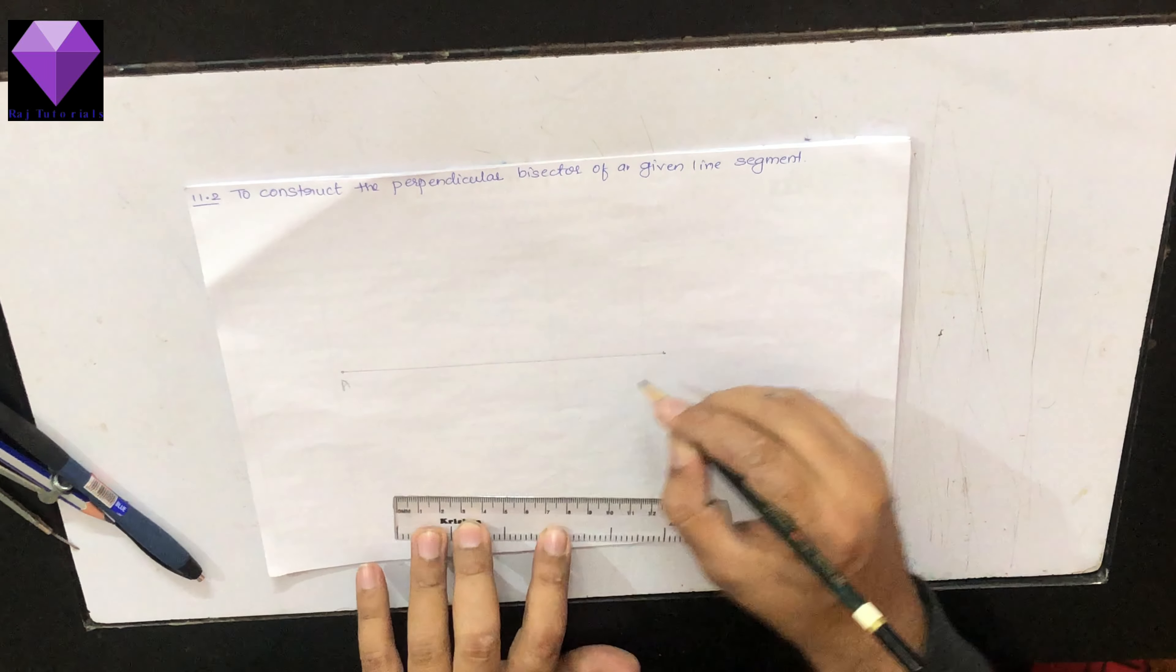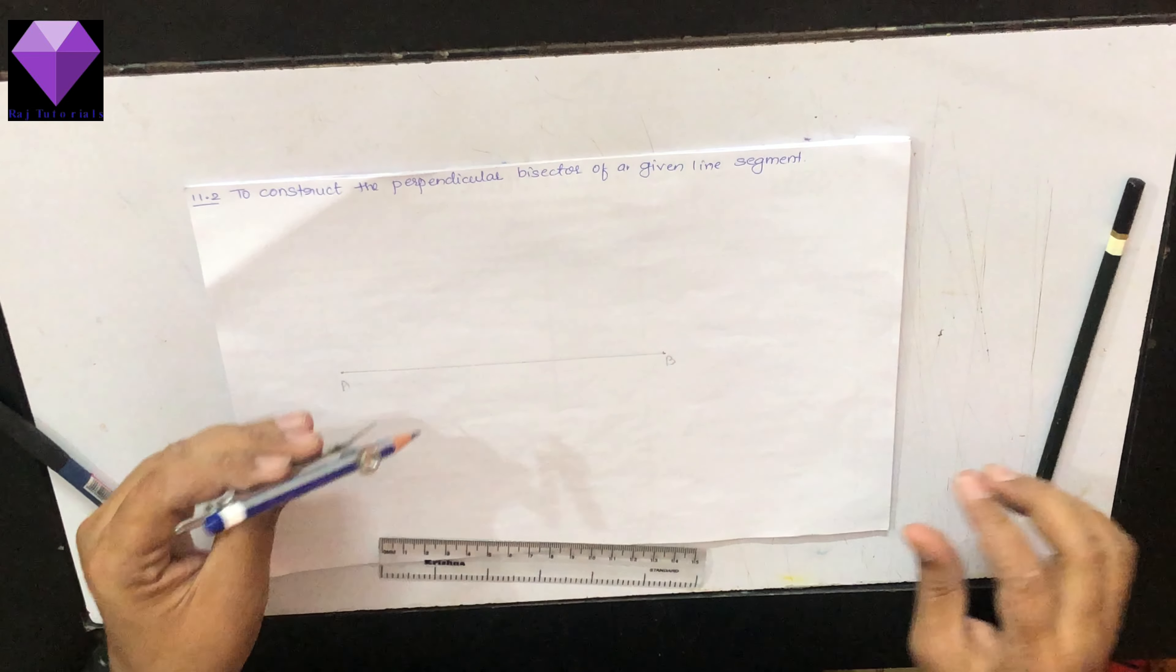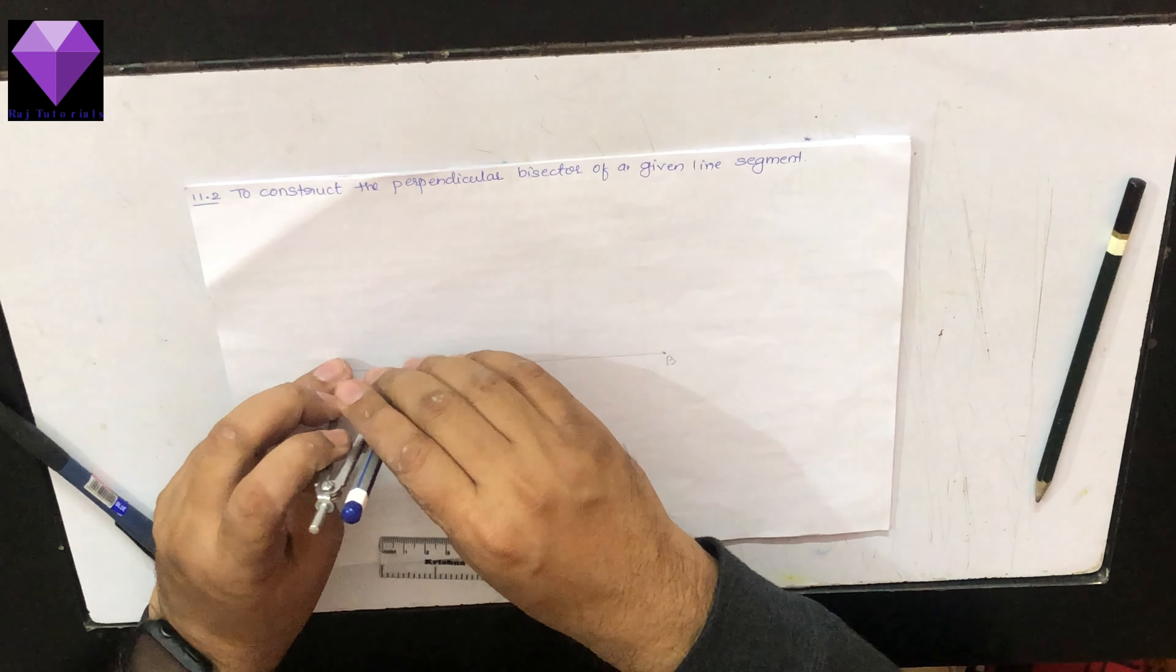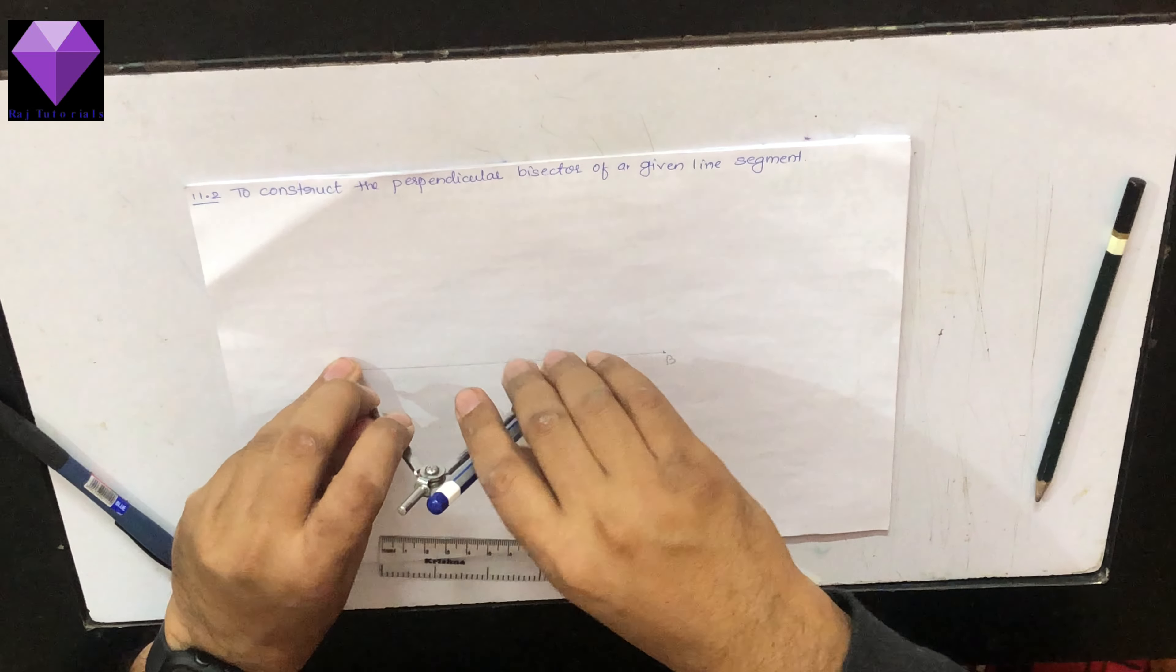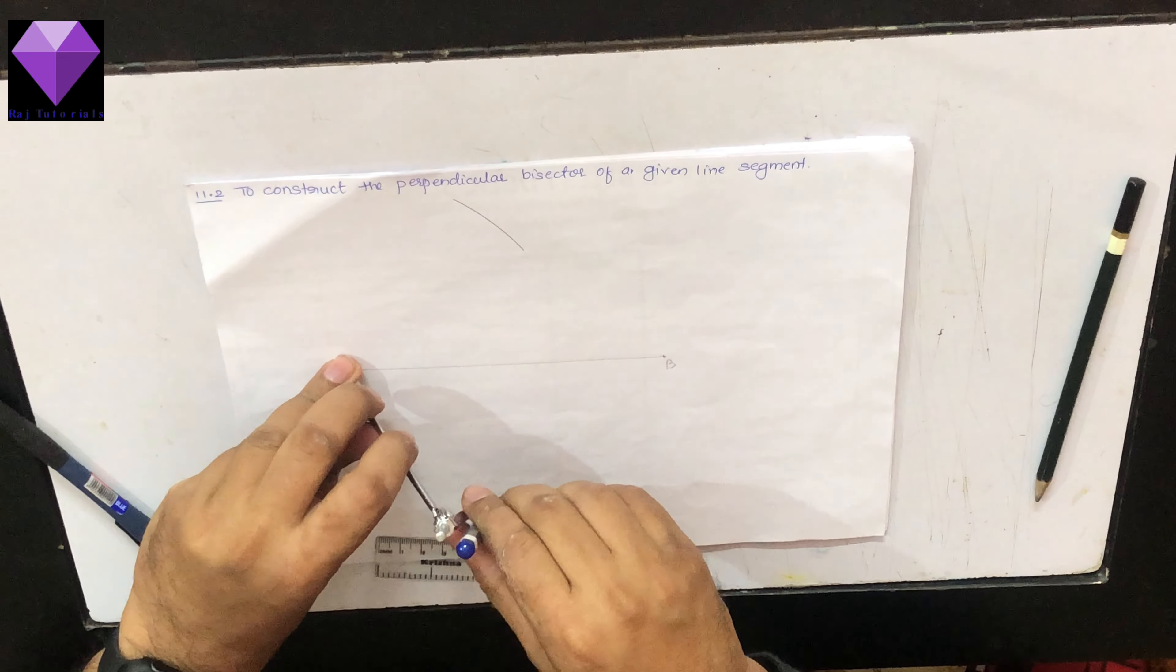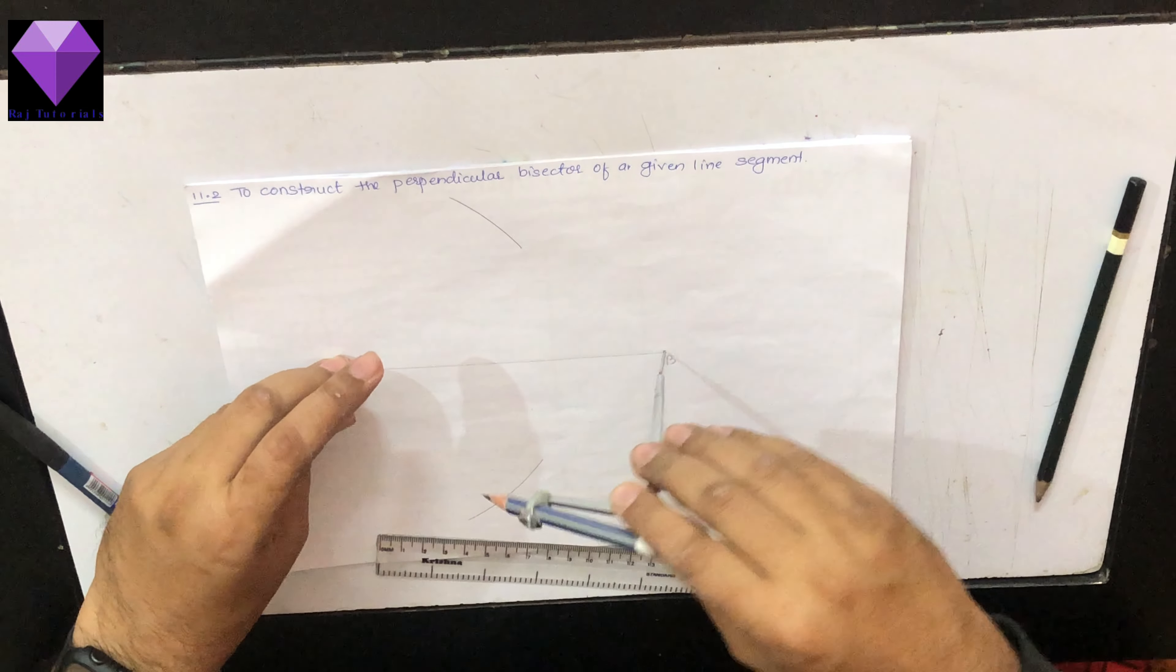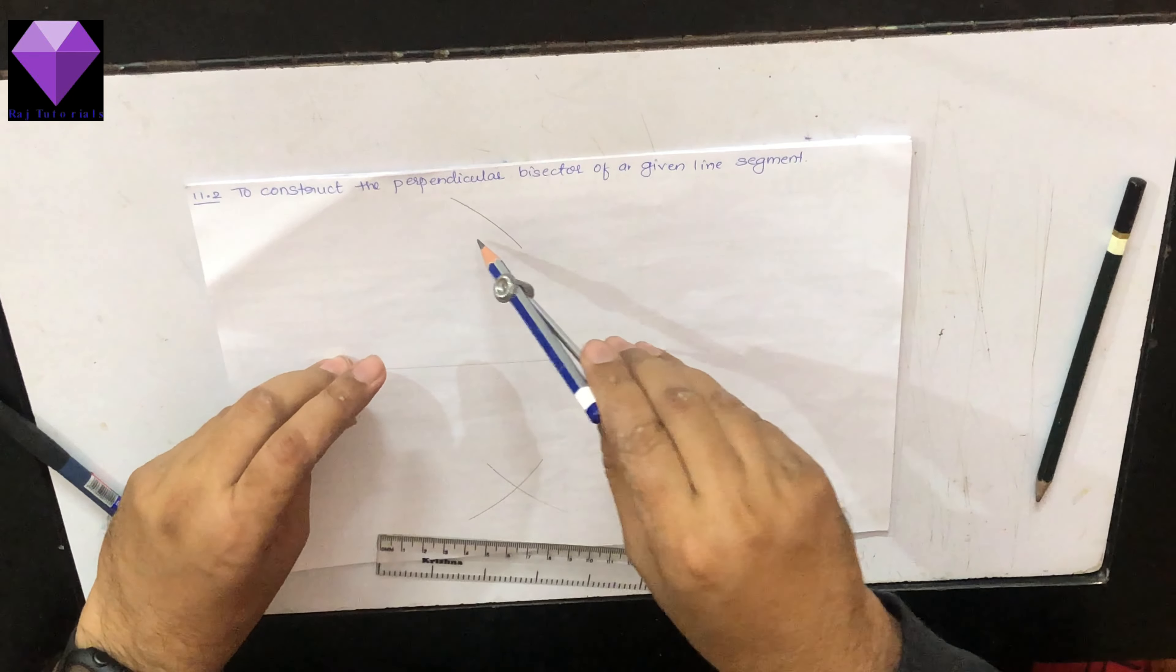Now, to draw the perpendicular bisector, I will take the compass and with A as center and radius more than half, I will make one arc up, one arc down. With the same radius and B as center, I will make one arc down, one arc up.